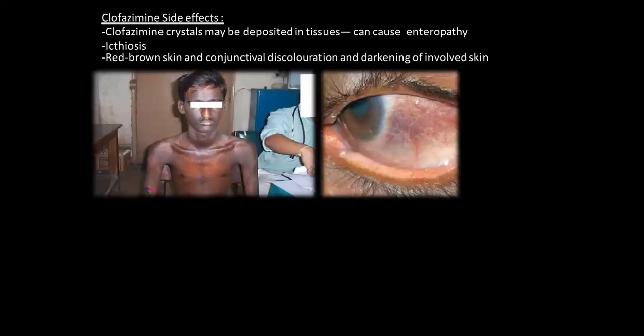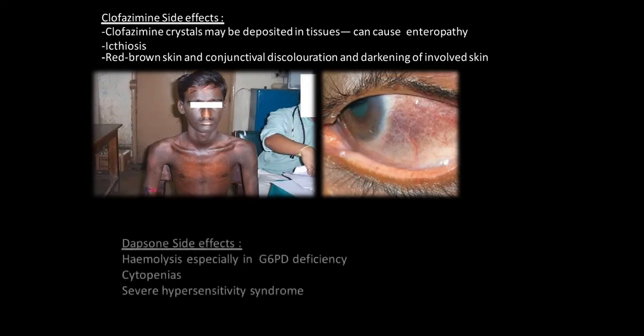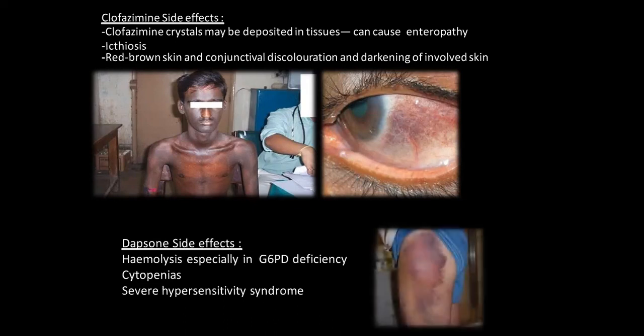Side effects of clofazimine: crystals are deposited causing enteropathy, ichthyosis, reddish-brown skin and conjunctival discoloration and darkening of involved skin — but this is all reversible. Dapsone side effects: haemolysis especially in G6PD deficiency — so in patients with G6PD deficiency we cannot give dapsone. Cytopenia and severe hypersensitivity syndrome — all reversible.